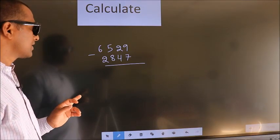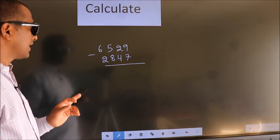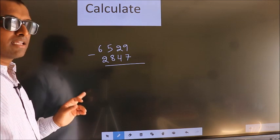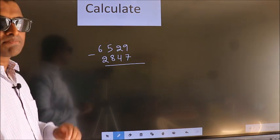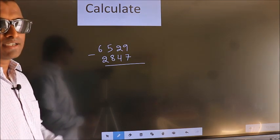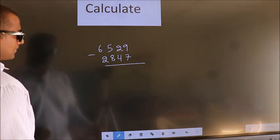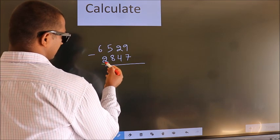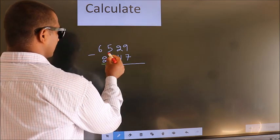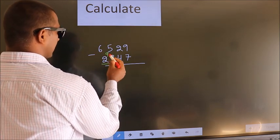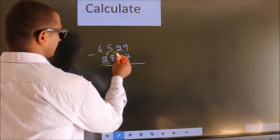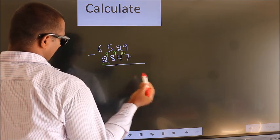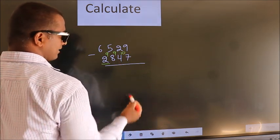Calculate 6529 minus 2847. How to subtract faster? See, we should leave the faster digit. Here you write 9, here you write 9, and here 10. Now we subtract.